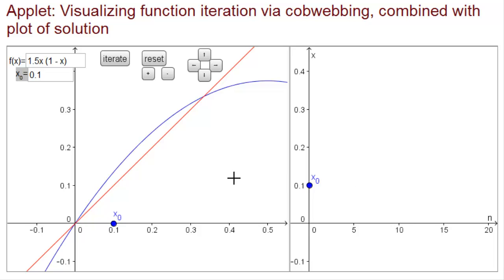We'll use the applet that combines cobwebbing on the left with the plot of the solution on the right. We've already entered our function in terms of the variable x because that's what the applet needs. We can immediately pick out the two equilibria which are the points where the diagonal line intersects the graph of the function. There's one equilibria down here at zero and another one up here at one third.